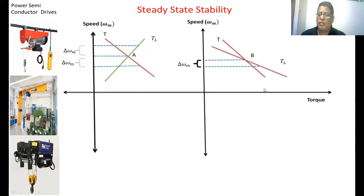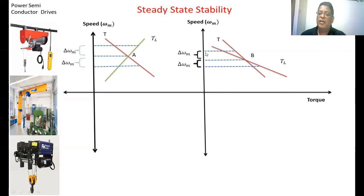From the corresponding point, the load torque is more than the motor developed torque. So again the motor will be decelerated — the speed of the motor will further decrease and it is not coming back to the original speed. Now if we increase the speed, the motor torque as well as the load torque change: the load torque will be less than the motor torque, so the speed of the motor will further increase. The operating point will go up and it is not coming back to operating point B.